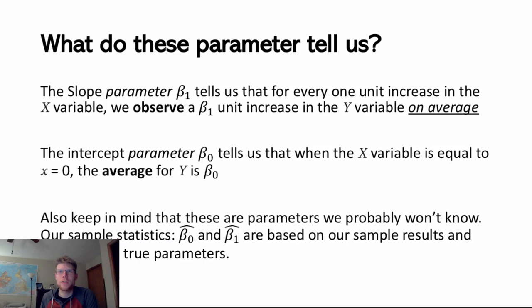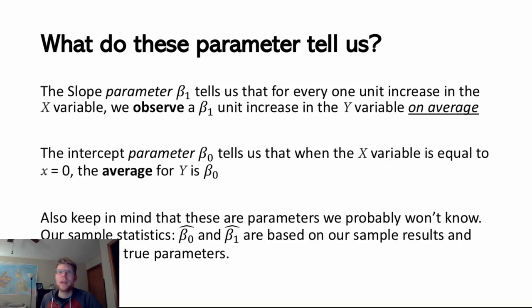So what do these parameters tell us? Without the hat, they represent the true relationship between these two variables. The slope parameter beta 1 tells us that for every one unit increase in the x variable, we observe a beta 1 unit increase in the y variable on average — it represents the average rate of change for y for every one unit increase in x. The intercept term beta 0 tells us that when the x variable is equal to 0, the average for y is beta 0.